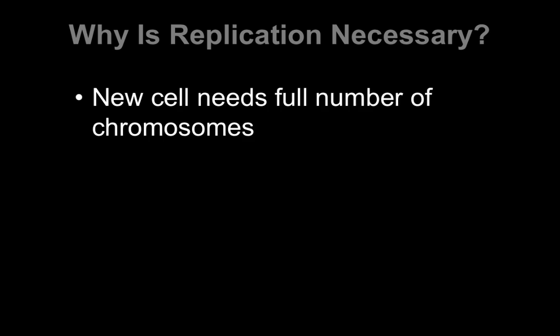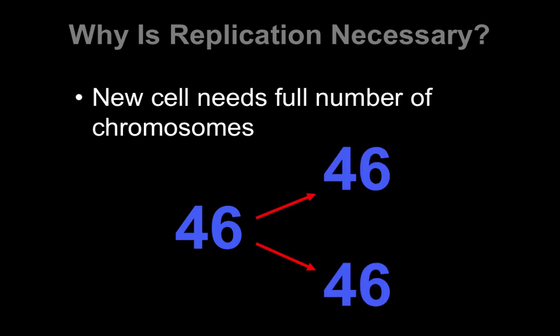Now why is this necessary? Well, if we're going to divide this cell in half, the two new cells that are formed both need the full number of chromosomes. A normal human has 46. And so both of those new cells need 46. So how can 46 turn into two that have 46 unless you actually double the DNA first? So this is why DNA replication is necessary. You have to double it so that when you split the cells in half, they both have the correct amount.